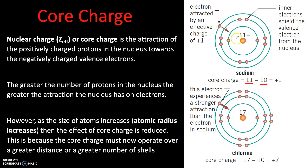This suggests that the nucleus of sodium only has a very weak hold over its outermost electron, and we see this in real life. Sodium is extremely reactive — it's very keen to get rid of this outer electron so that it's left with eight electrons in its valence shell, which makes it a lot more stable. With a core charge of just plus one, it's a very weak hold on that outer electron, so this electron is very free to go off and react with another atom.